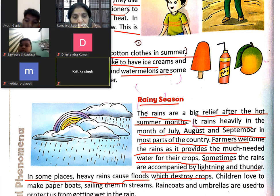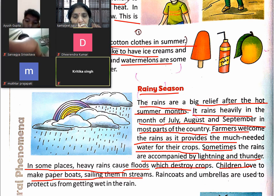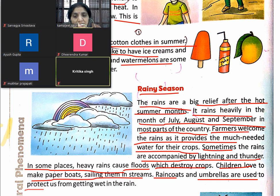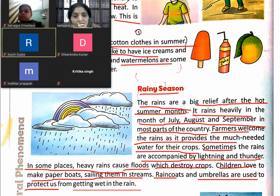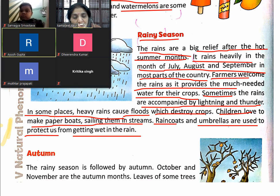Floods destroy crops and mud houses. Children love to make paper boats and sail them in streams. Rain coats and umbrellas are used to protect us from getting wet in the rain.